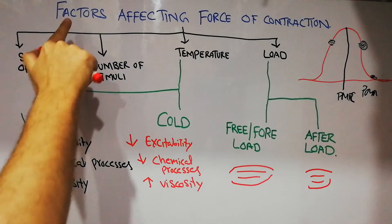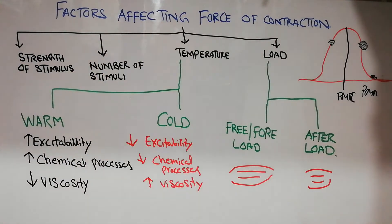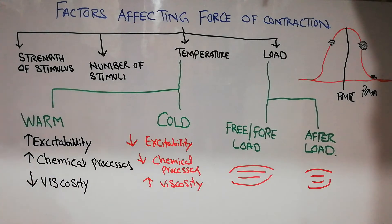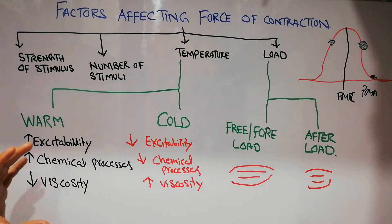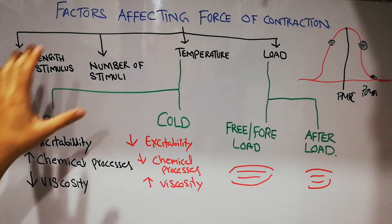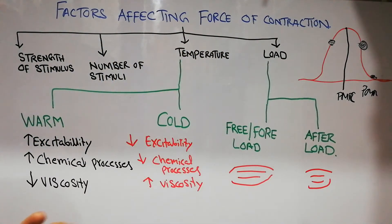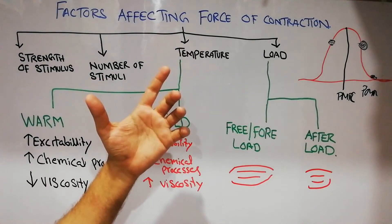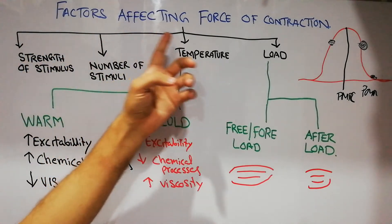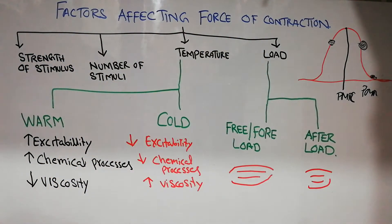In this lecture we are going to discuss the factors affecting the force of contraction of skeletal muscles. We were discussing the properties of skeletal muscles and previously discussed the excitability of skeletal muscles. Then we discussed the contractility and the factors that affect the force of contraction of skeletal muscles.